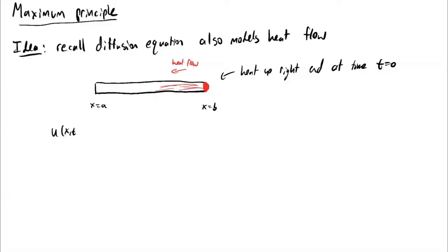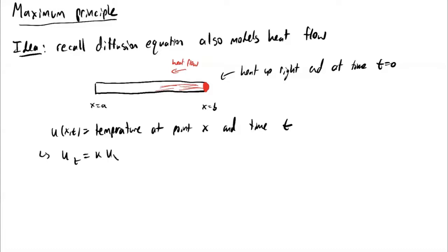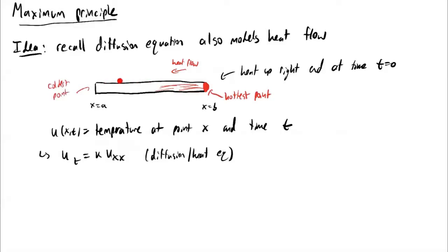If I call my function u of x, t — the temperature at point x and time t — then this function obeys the diffusion equation, also sometimes called the heat equation. The time derivative is some constant times the x derivative. We'll notice that on one side is the hottest point, and on the other side is the coldest point. As I let this heat continue to flow from the source to the other side of the rod, the metal rod is going to get hotter. But at any point in time, the hottest point is going to be on the right hand side and the coldest point on the left.